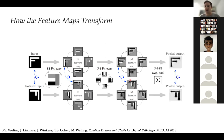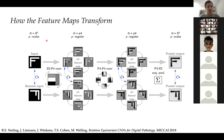Finally, you could do a pooling over the orientation channels: for each spatial location, take a sum or maximum over the four channels. The result would be an image with the same transformation behavior as the input — if you rotate the input, the output also rotates. This could be useful for tasks like semantic segmentation.